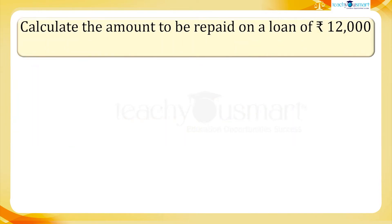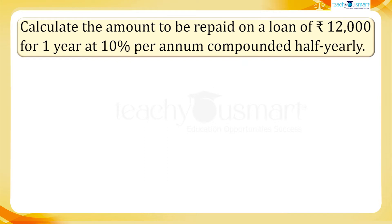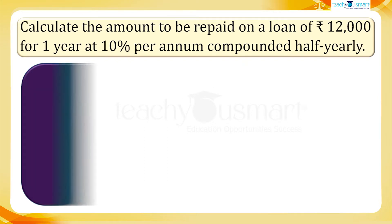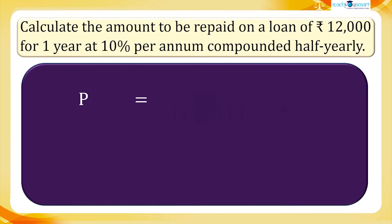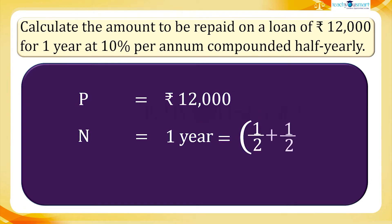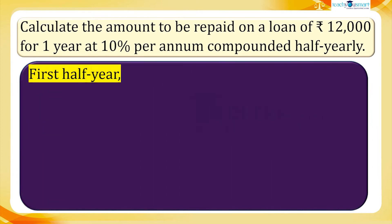Calculate the amount to be repaid on a loan of 12,000 rupees for one year at 10% per annum compounded half yearly. Here we have principal P equals 12,000 rupees, number of years n equals one year, which is two half years, and rate of interest r equals 10%. Now find the interest and amount for the first half year.